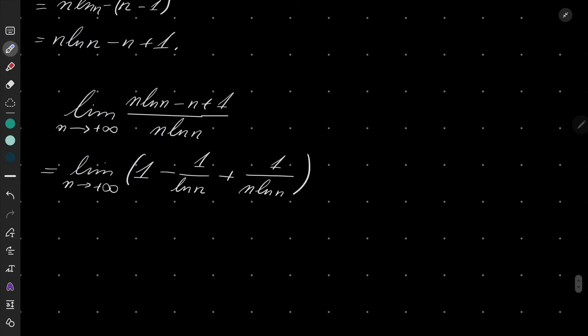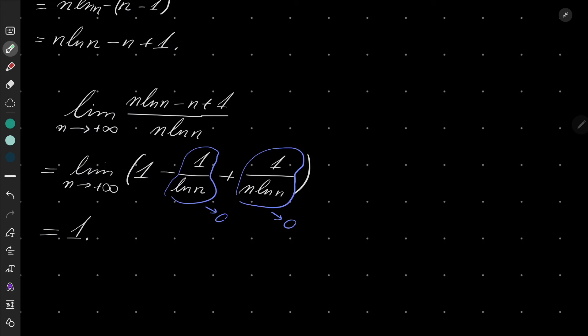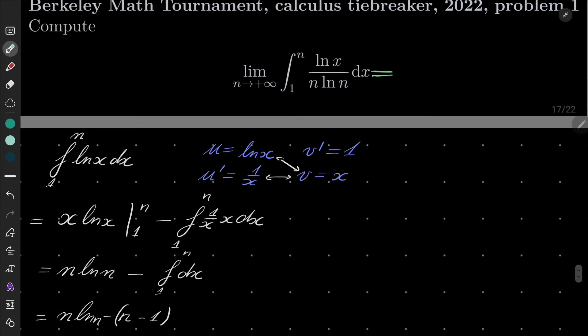What happens? Well this fraction of course goes to 0. This as well. And we are left with 1. So our limit of our integral happens to be just 1.